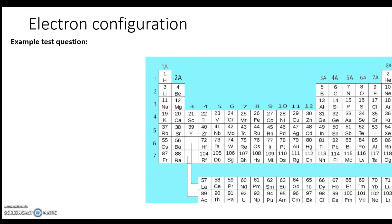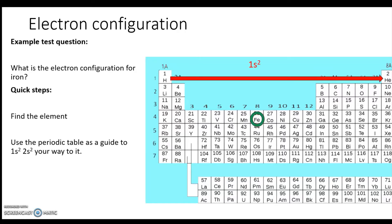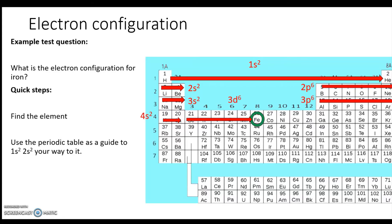The next one is iron, and we do this one just like the others. We have these two quick steps: we find the element, which is pretty easy—it's right in the middle—then we 1s² 2s² our way to it: 1s² 2s² 2p⁶ 3s² 3p⁶ 4s² and then 3d⁶: one, two, three, four, five, six. It's always good to check.